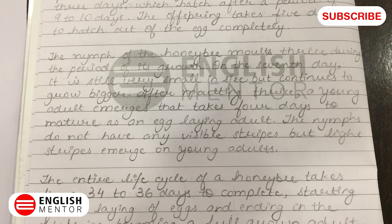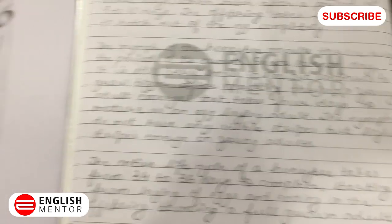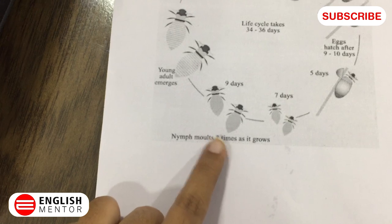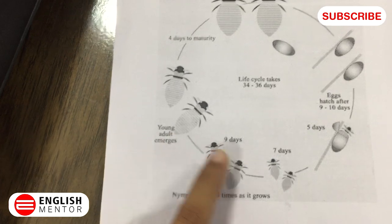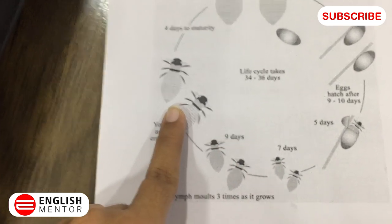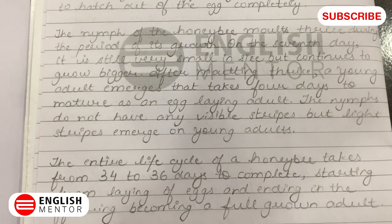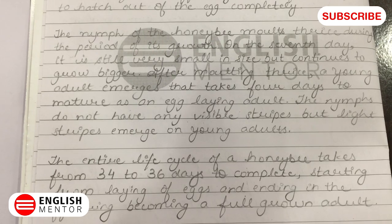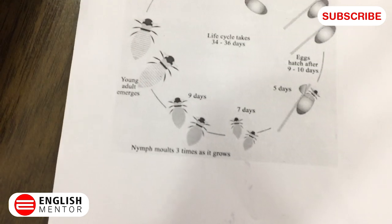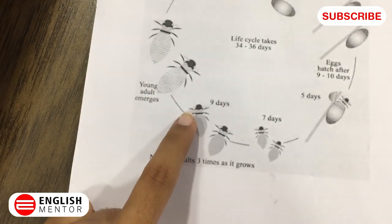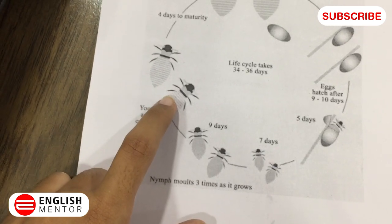After molting thrice, a young adult emerges that takes four days to mature as an egg-laying adult. After it molds three times, a young adult emerges and grows bigger in size. The nymphs do not have any visible stripes, but light stripes emerge on young adults. We can see that there are no visible stripes on the nine-day offspring, but on a young adult there are some light-colored stripes.